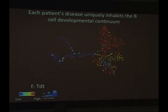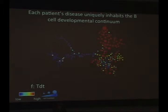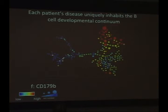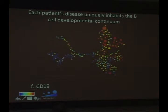Coloring the SPADE tree for one patient based on different markers shows the organization. A big circle means lots of cells, a small circle means fewer cells; red is high marker intensity and blue is low. The top-right branch of the tree is very high for TDT expression. CD24 expression is homogeneous throughout this leukemia sample except for a few populations with lower expression. CD179B, a marker of the surrogate light chain, is expressed only at the top of the tree. CD19 localizes to that top-right side, while CD20 is a little bit lower on the tree.